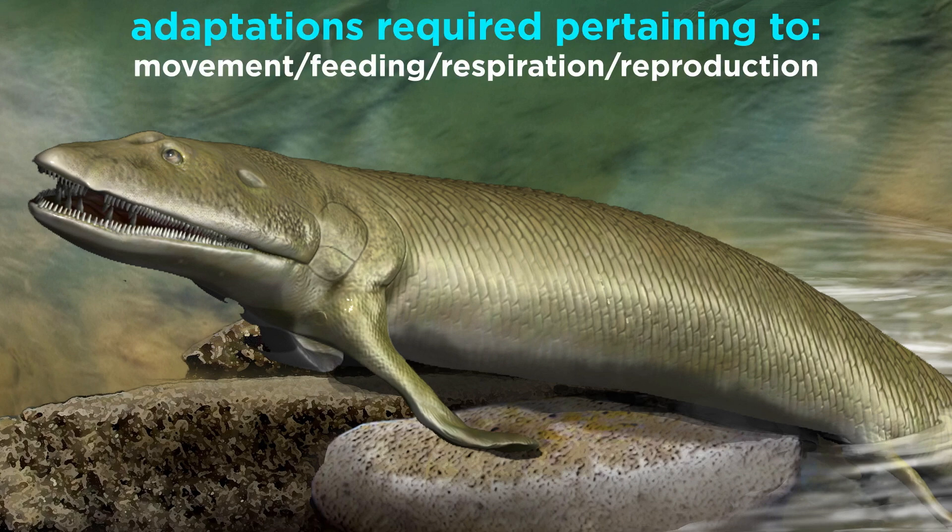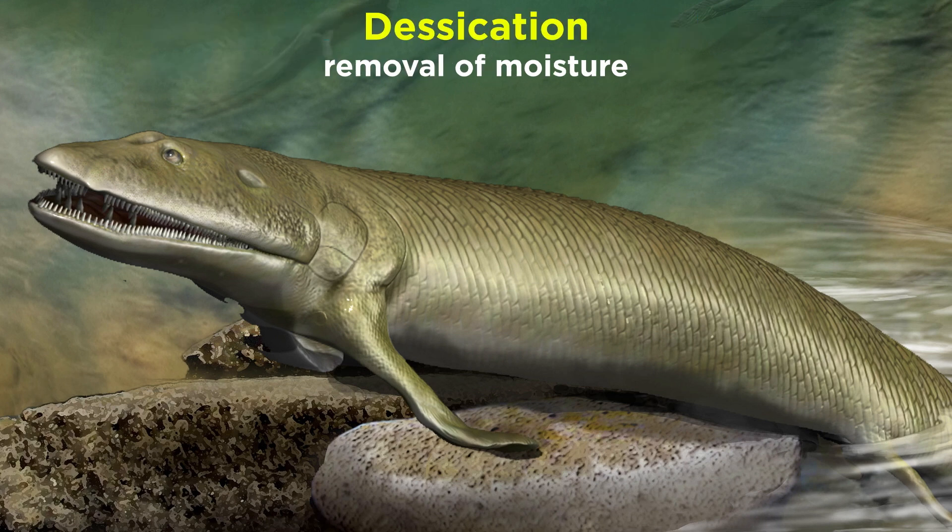Among various physiological mechanisms this included changes to movement, feeding, respiration, and reproduction. Perhaps the greatest constraint imposed by terrestrial environments was desiccation, or the removal of moisture.